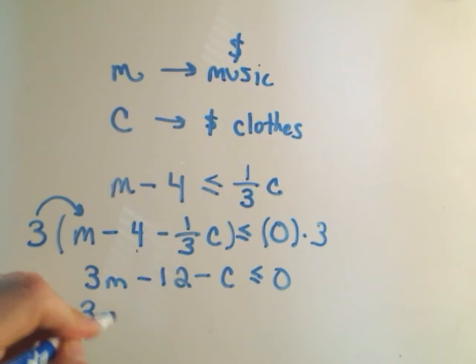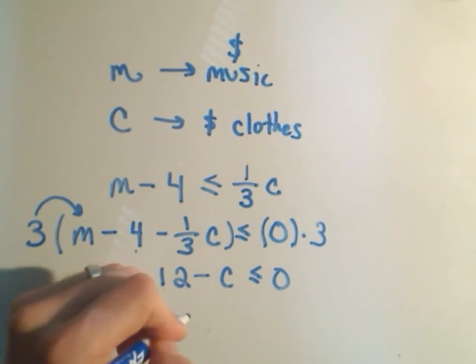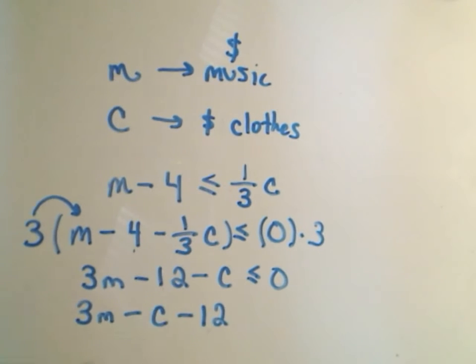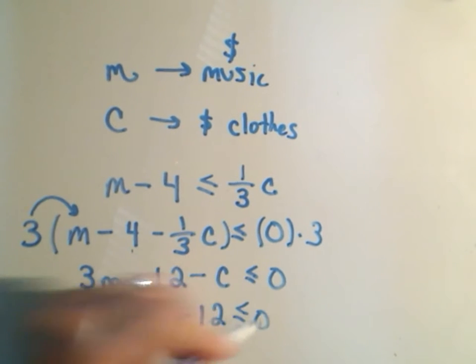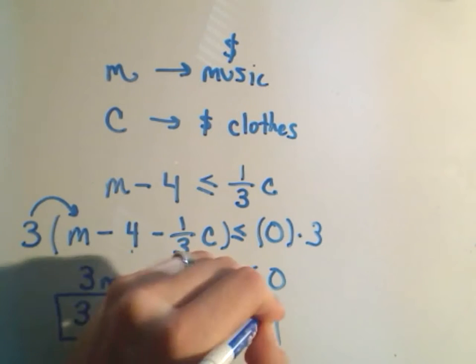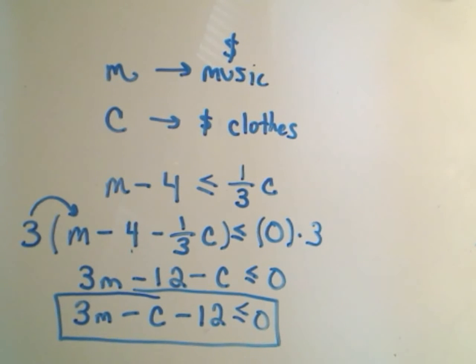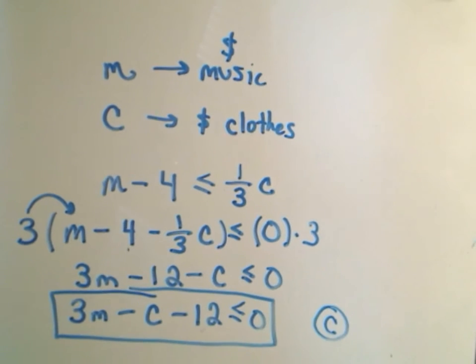And the way the solutions had this written, this is 3M, they put the minus C in the middle, minus 12 next, and that'll be less than or equal to zero. So that will be your solution in this case, and this was solution number C.